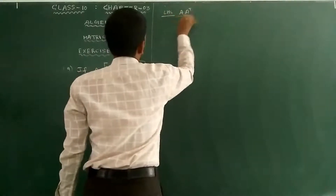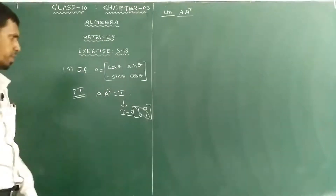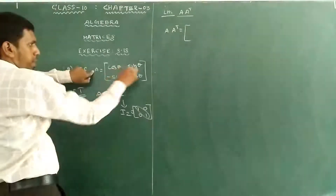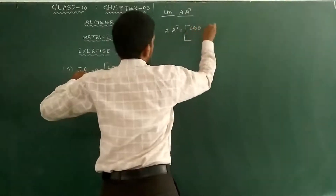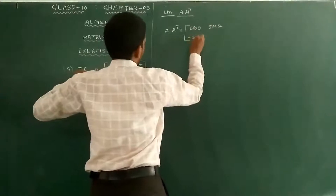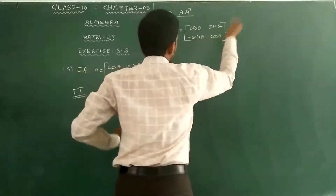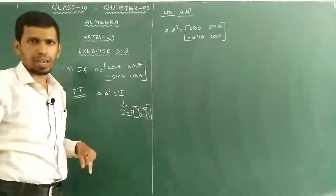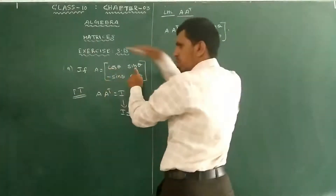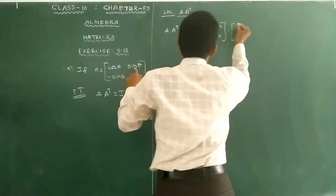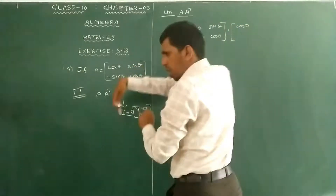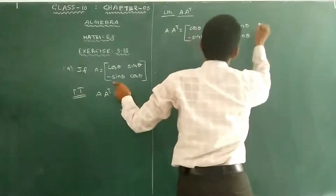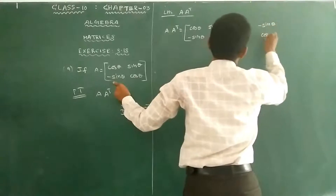So the next step is to find A transpose. The matrix A equals [cos θ, sin θ; −sin θ, cos θ]. Then A transpose is obtained by interchanging rows and columns, giving [cos θ, −sin θ; sin θ, cos θ].